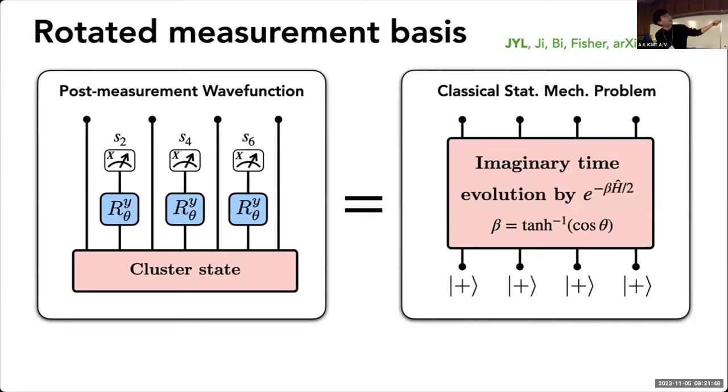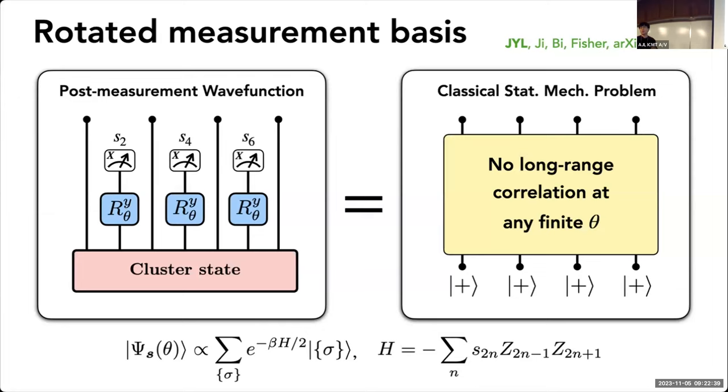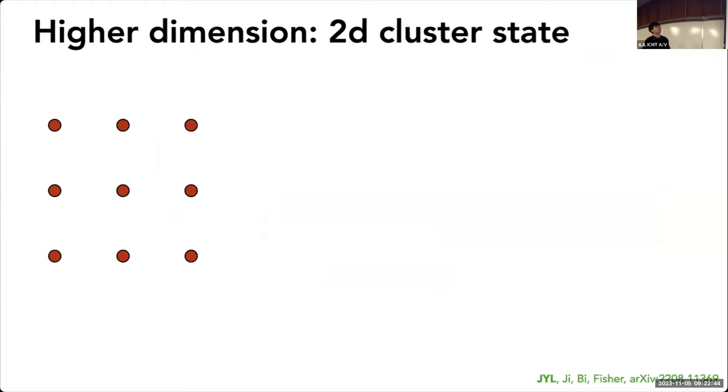What I can show is that this procedure—rotating by theta and measuring all the ancilla qubits with outcomes S—is actually given by imaginary time evolution by this Ising Hamiltonian with finite time. This is interesting because when everything is perfect, it realizes infinite time evolution, but with imperfect measurement it's realizing finite time evolution. Your wave function, consisting of superpositions of all possible configurations in Z basis, each component is weighted by this Boltzmann factor, and the correlation structure resembles the one-dimensional Ising model. We know that one-dimensional Ising model has no long-range order at any finite temperature, meaning no long-range order at any finite angle.